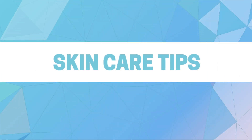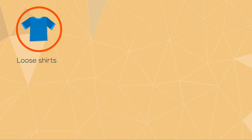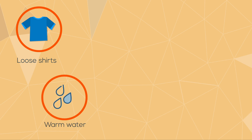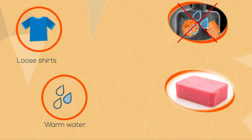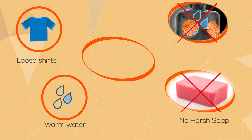Here are a few things you can do to make the skin less sensitive during radiation treatment: wear loose-fitting shirts, use warm instead of hot water when showering, try not to let the shower water fall directly on your breasts, avoid harsh soaps with a lot of fragrance, and try to keep your arm away from your body whenever possible.